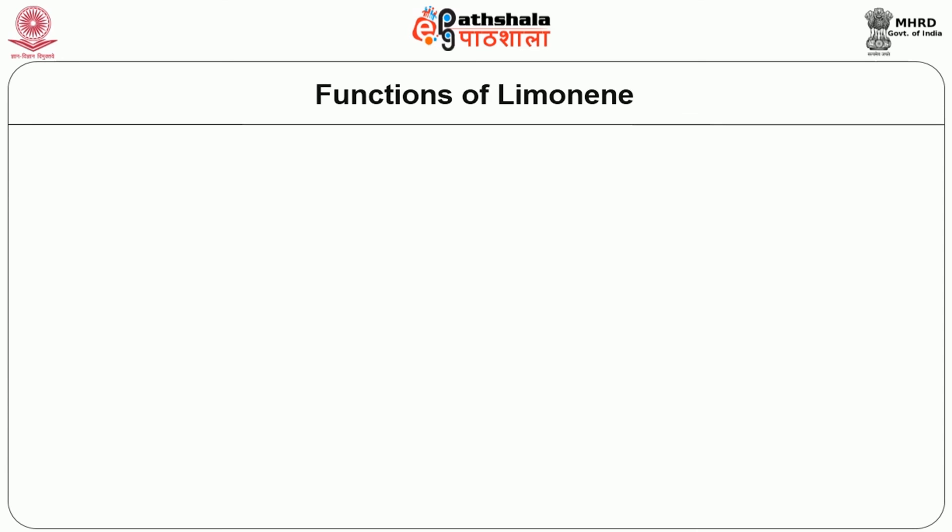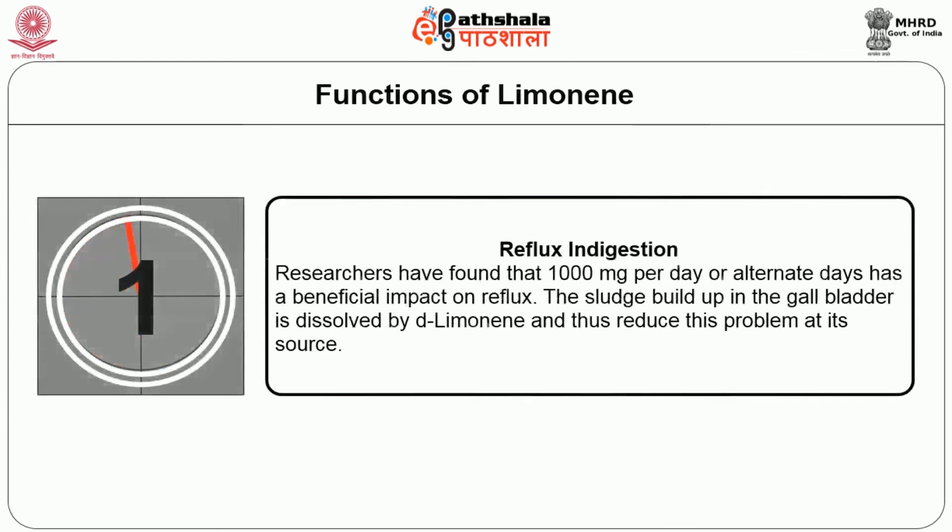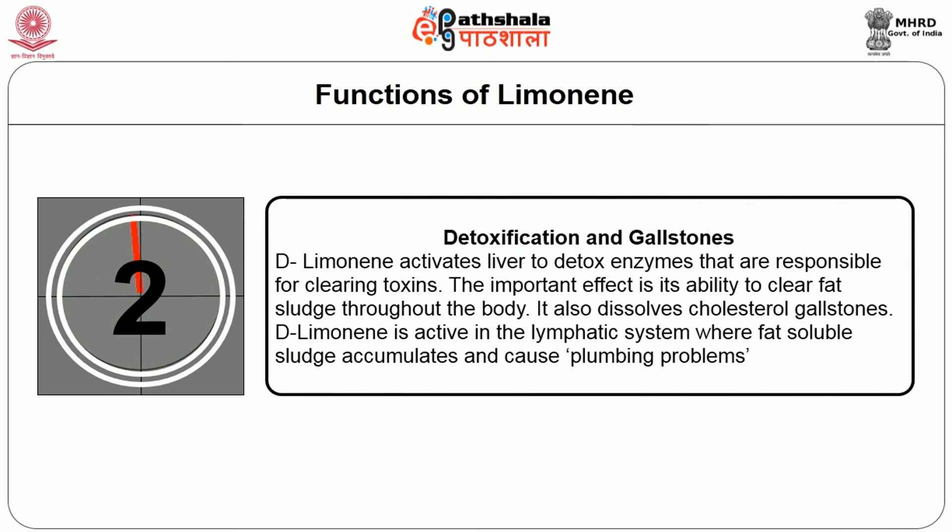Researchers have found that 1000 mg per day or on alternate days has a beneficial impact on acid reflux. The sludge buildup in the gallbladder is dissolved by D-limonene, thus reducing this problem. D-limonene activates the liver to detoxify enzymes that are responsible for clearing toxins. Its important effect is its ability to clear fat sludge throughout the body. It also dissolves cholesterol gallstones. D-limonene is active in the lymphatic system, where fat-soluble sludge accumulates and causes problems.